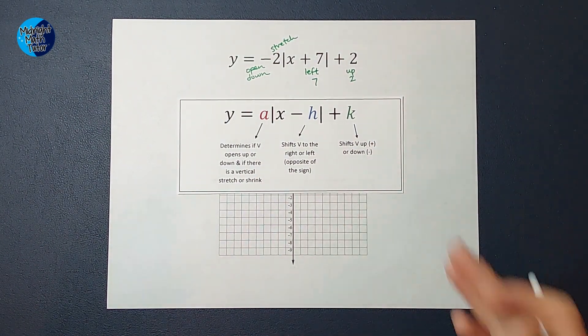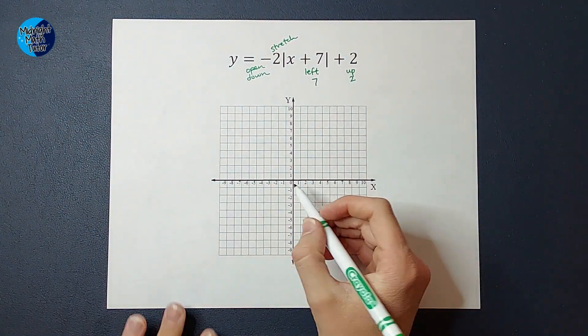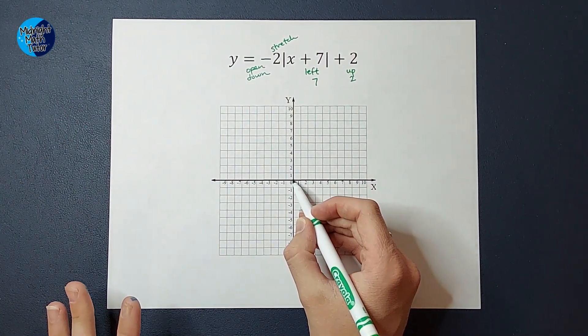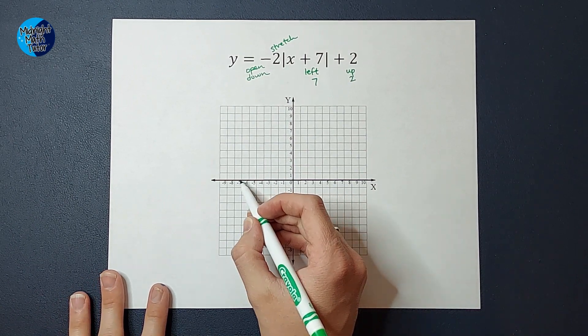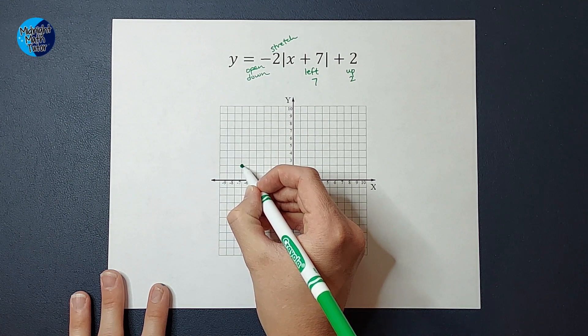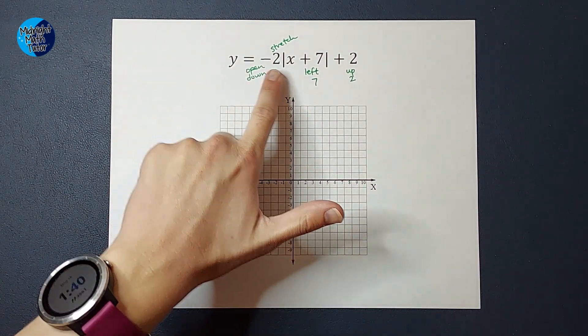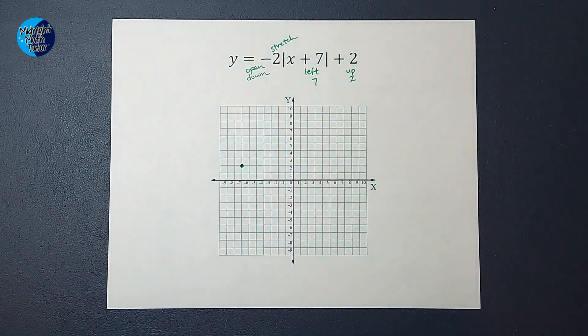So let's go ahead and see what this looks like in action. My parent graph started at (0, 0), right? But this one, we're going to move to the left 7 and up 2. So that is my new vertex. Now remember, it's negative, so it's going to open down.